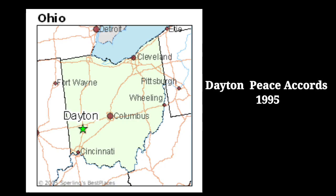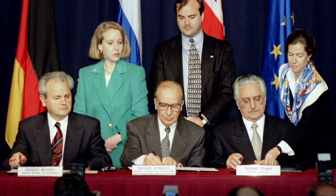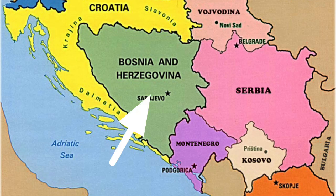Bill Clinton also arranged the Dayton Peace Accords, which were held in the state of Ohio in December 1995. They were signed by the Presidents of Bosnia, Croatia and Serbia and established Bosnia-Herzegovina as an independent state. In effect, they brought peace to the Balkans.